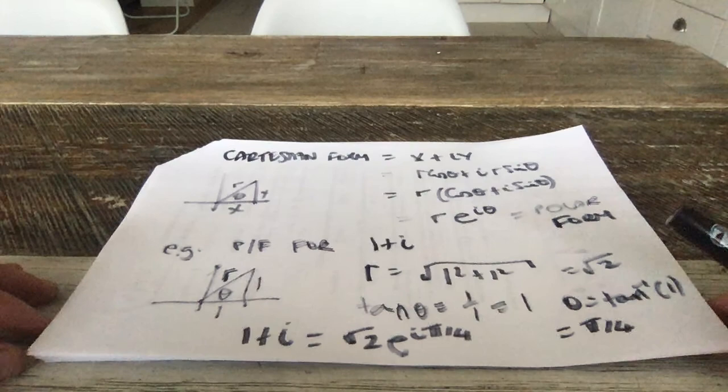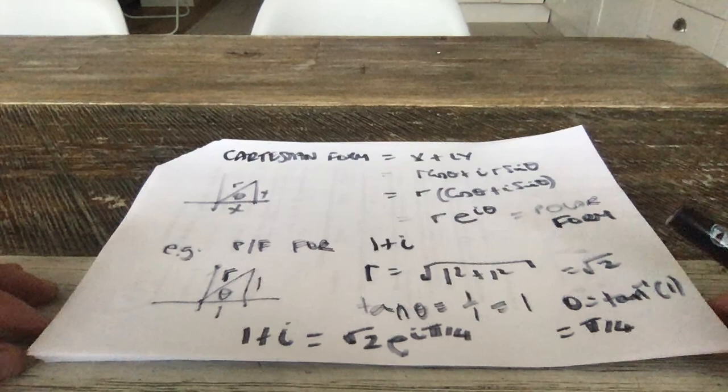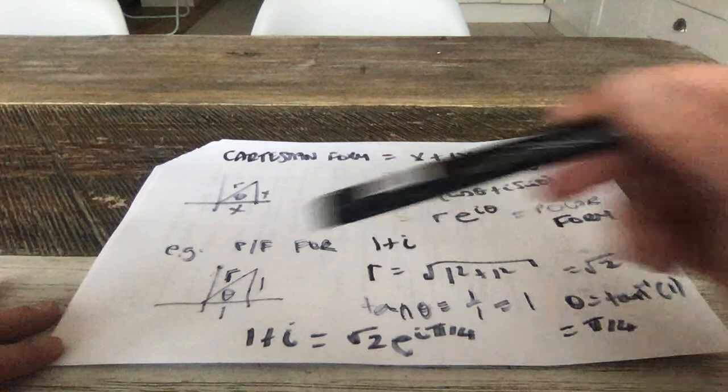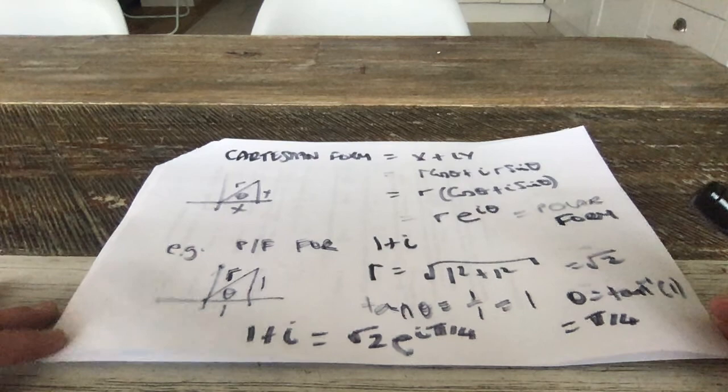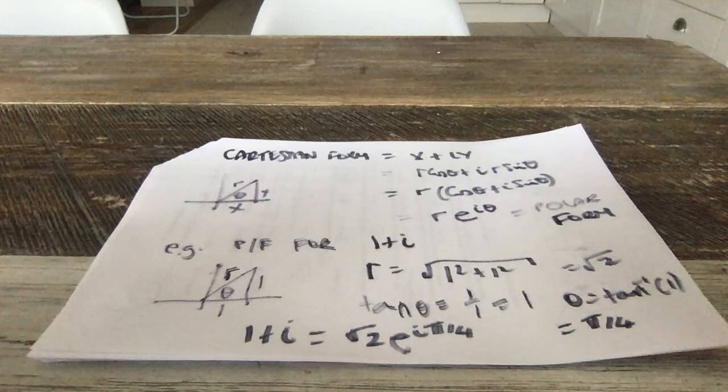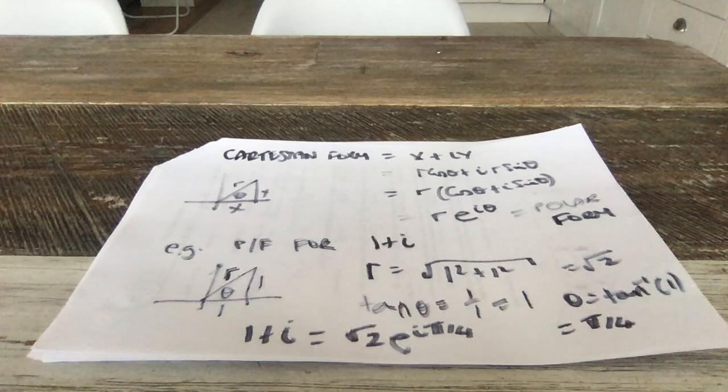Sometimes in analysis you want the polar form — it's much more convenient than the Cartesian form, and sometimes you prefer Cartesian. Switching between two equivalent forms of the same thing is maybe 50% of engineering and mathematics. If the complex number is in the first quadrant, conversion is very straightforward.